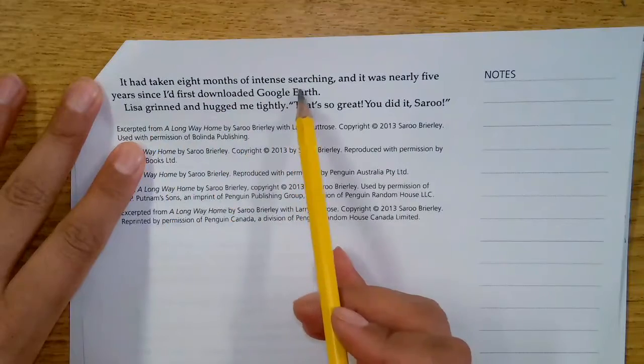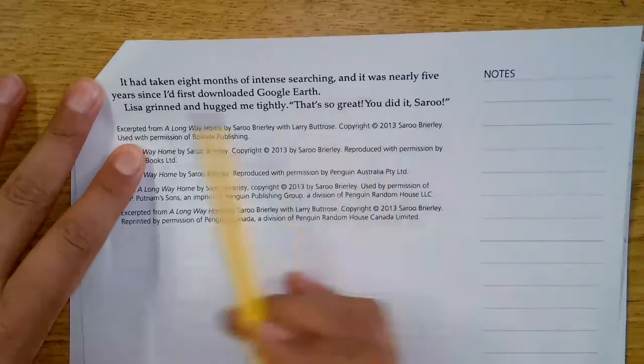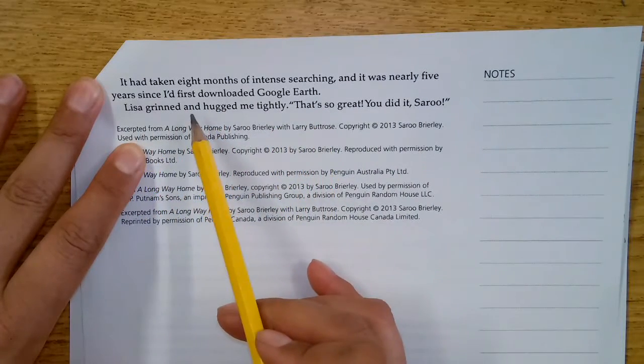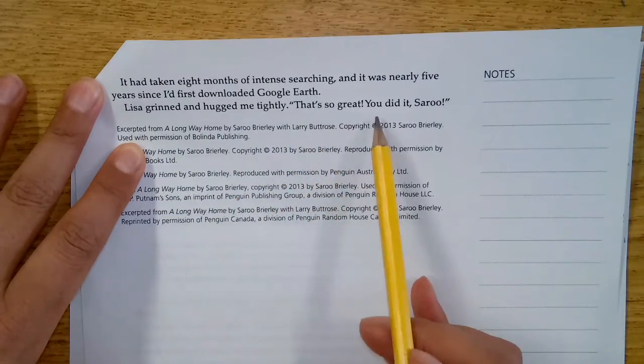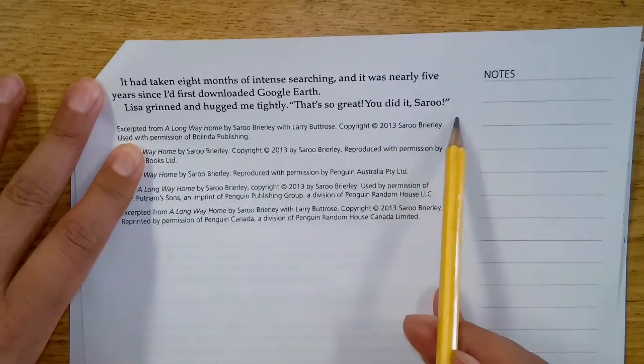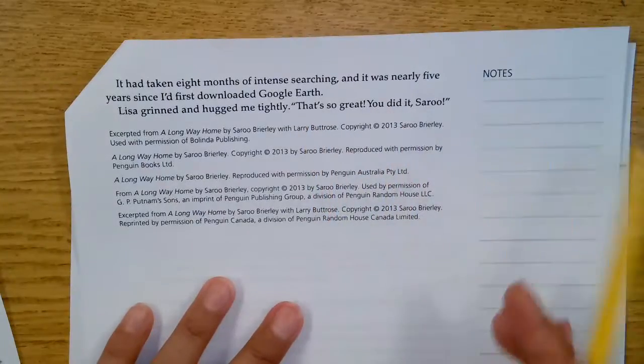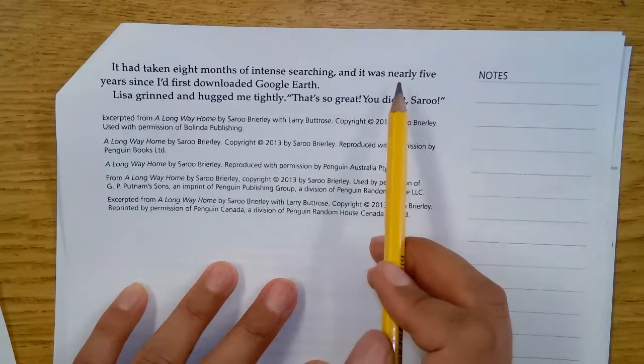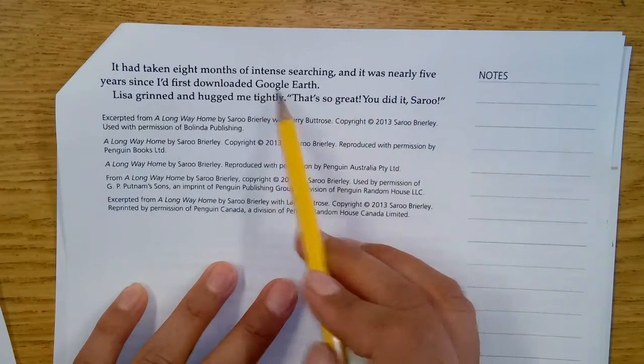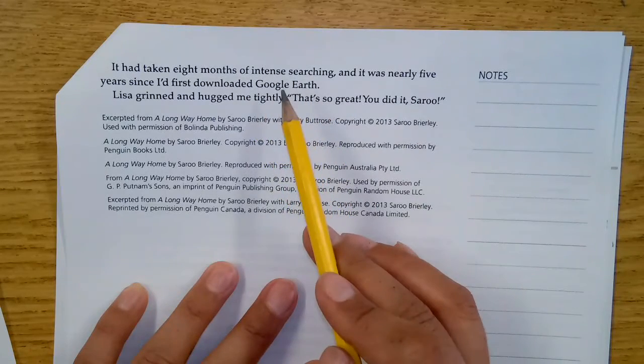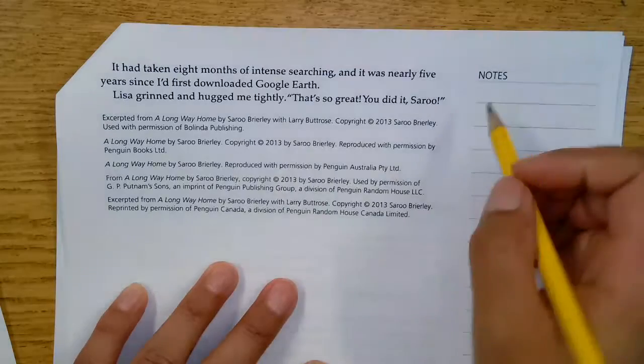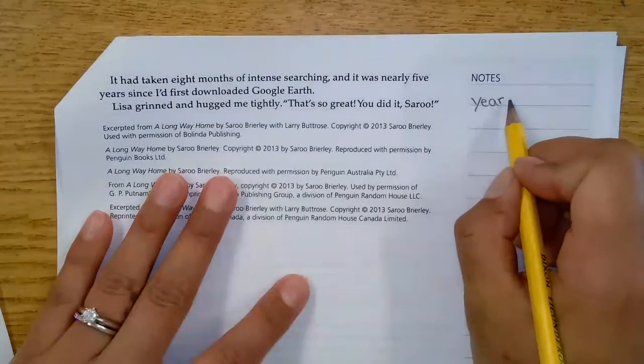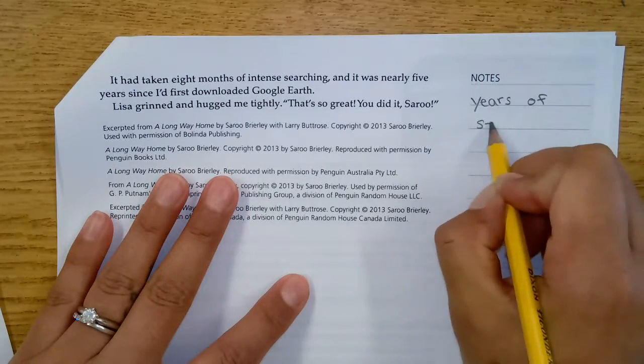It had taken eight months of intense searching. And it was nearly five years since I'd first downloaded Google Earth. So here at the end of this part of the memoir, we see that it's actually taken him five years since he downloaded Google Earth, when he thought of the idea of using Google Earth to find his family. So it's actually been years of searching. This didn't just happen overnight. It didn't happen in a week. It took years of searching for him to find his home.